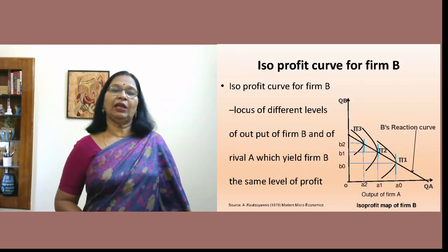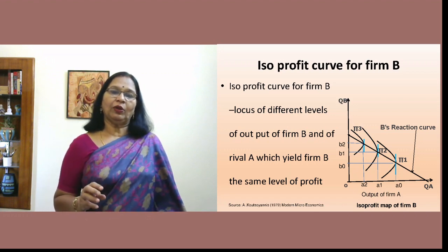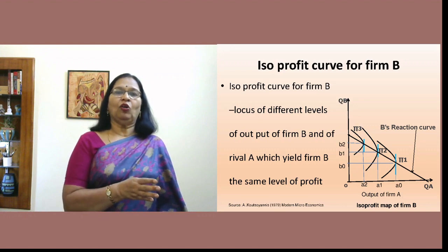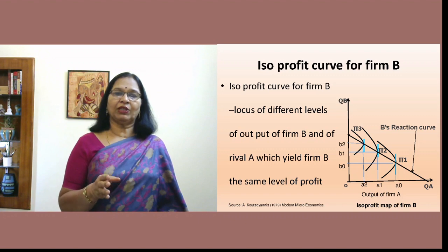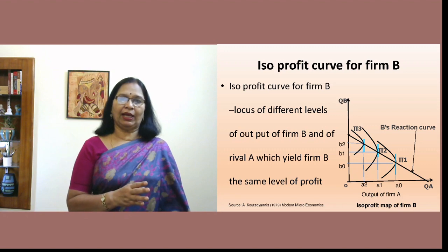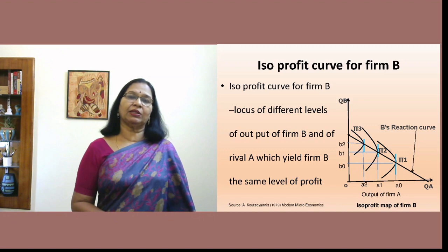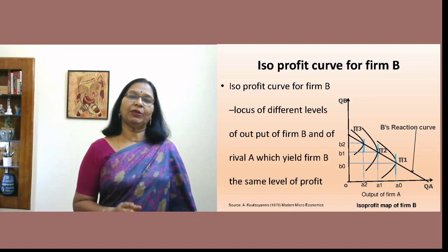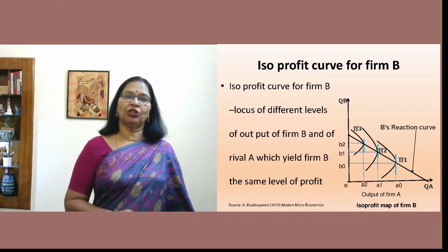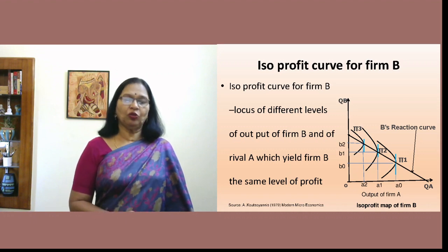Now consider the isoprofit curves of firm B. Firm B's isoprofit curves are stacked toward the vertical axis. Isoprofit curves 1, 2, and 3 of firm B face firm A's axis. Each isoprofit curve gives firm B the same level of profit for a certain combination of firm A's output and firm B's corresponding response.